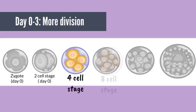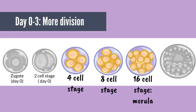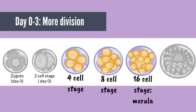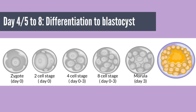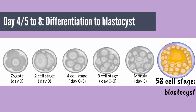From day 0 to 3, further division of the blastomeres forms a solid ball of 16 cells called the morula. Next, on day 4 or 5, differentiation begins and fluid accumulates between morula cells, in addition to further cell division, to form the 58-cell stage, or the blastocyst.